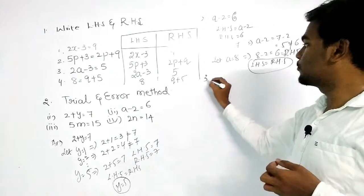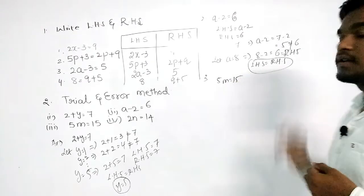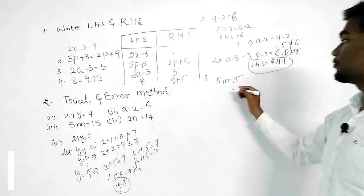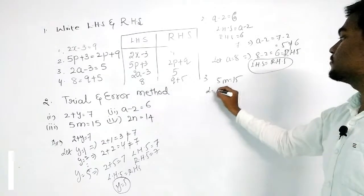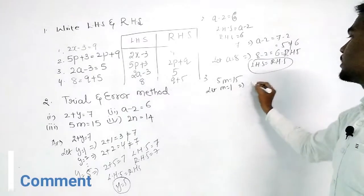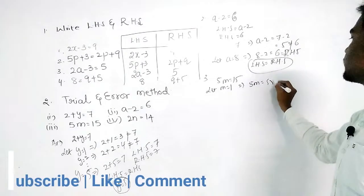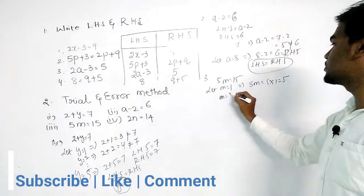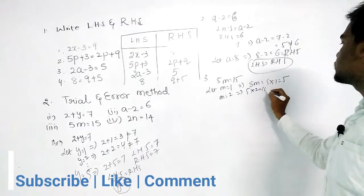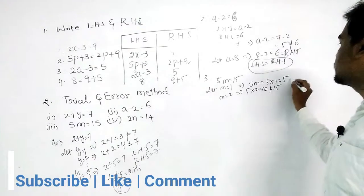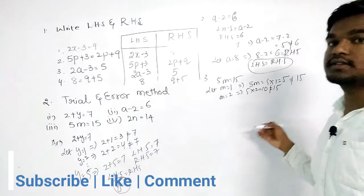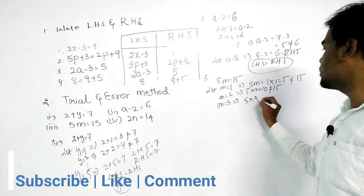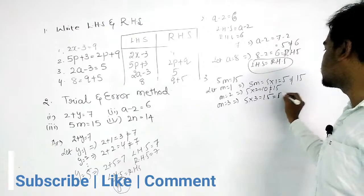The third question is 5m equal to 15. Let m equal to 1: 5 into 1 equals 5, not equal to 15. Let m equal to 2: 5 into 2 equals 10, not equal to 15 — LHS is not equal to RHS. Let m equal to 3: 5 into 3 equals 15, which equals RHS. So the required value is m equals 3.